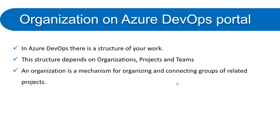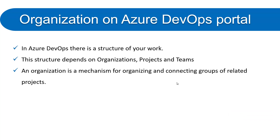An organization is a mechanism for organizing and connecting groups of related projects. If a company has thousands of projects in the Azure portal, managing all of them is not easy. You can create multiple groups from those projects and for each group create an organization. Under each organization there can be any number of projects, and each project will have a team.